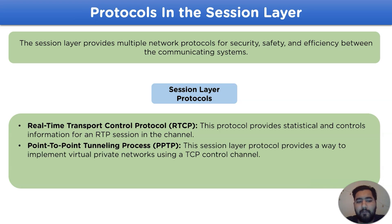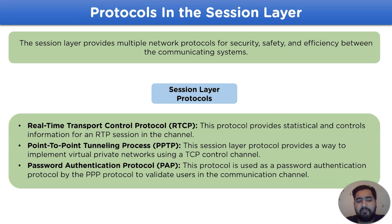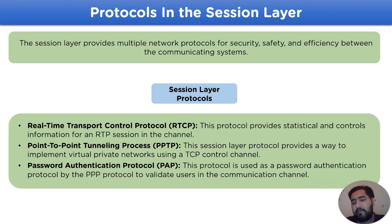Then we have Point-to-Point Tunneling Protocol (PPTP). This session layer protocol provides a way to implement Virtual Private Networks (VPN) using PPP in the network channel. Then we have Password Authentication Protocol (PAP). This protocol in the session layer is used as a password authentication protocol by the PPP control to validate users in the communication channel.